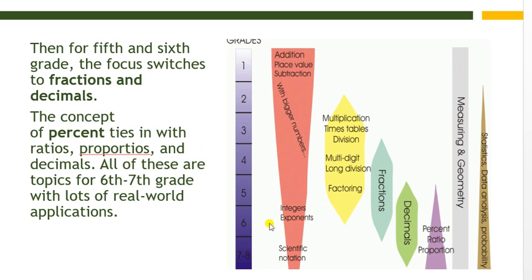As you can see in the graph, the sixth and seventh grade portion shows a considerable amount of decimals, fractions, and percent, ratios, and proportions. The triangle shape in the graph shows that in fifth grade, percentage, ratio, and proportion are lightly introduced, and as we reach sixth grade the inclusion increases, until in seventh and eighth grade percent, ratio, and proportion are taught in more detail.